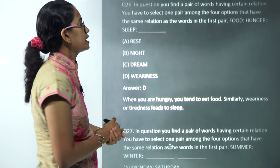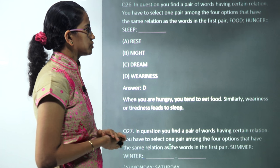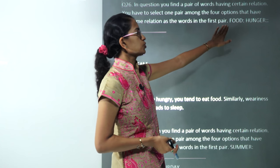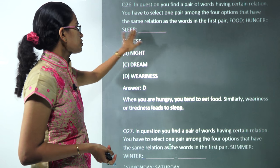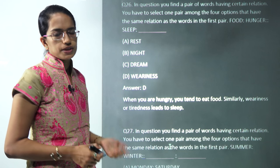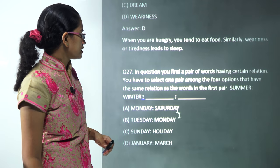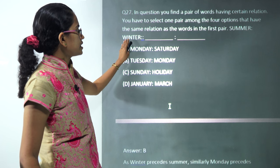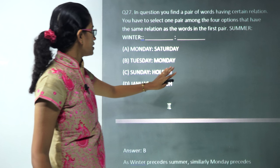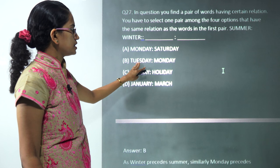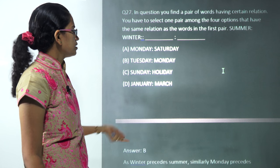This question is a kind of direct question. When you are hungry you go for food, when you are tired you go for sleep, so weariness would be the correct answer. The next question: as winter precedes summer, similarly you have Monday that precedes Tuesday, so B is the only correct answer here.